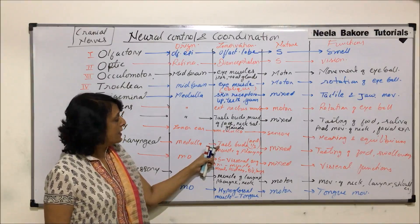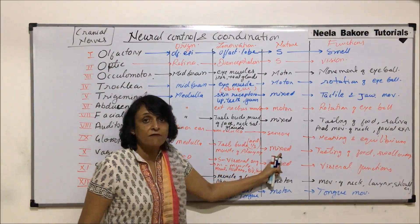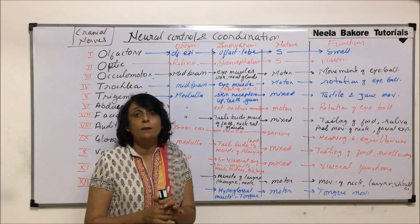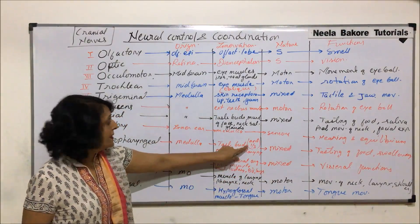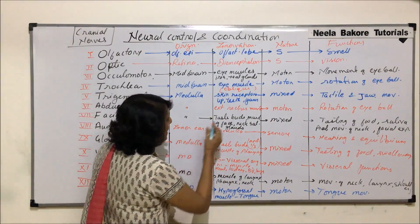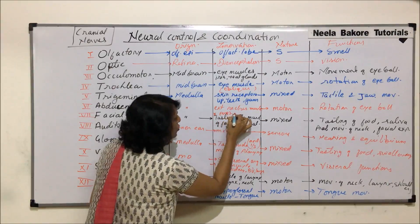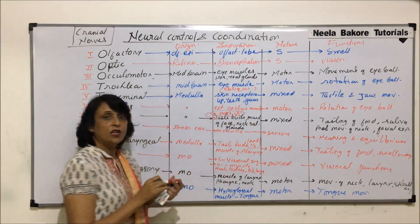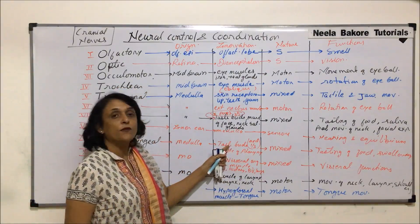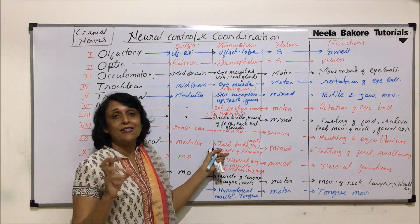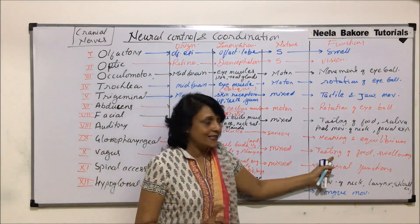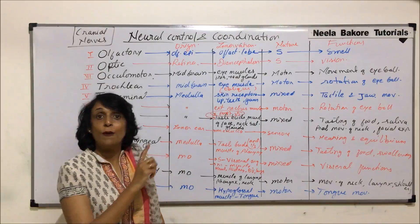Glossopharyngeal arises from the medulla. It is a mixed nerve with both sensory and motor branches. The sensory part is responsible for the posterior one-third of the taste buds and perception of taste. The motor part goes to the muscles of the pharynx and is responsible for movement of the pharynx. So the functions are tasting — that is sensory — and swallowing — that is motor.